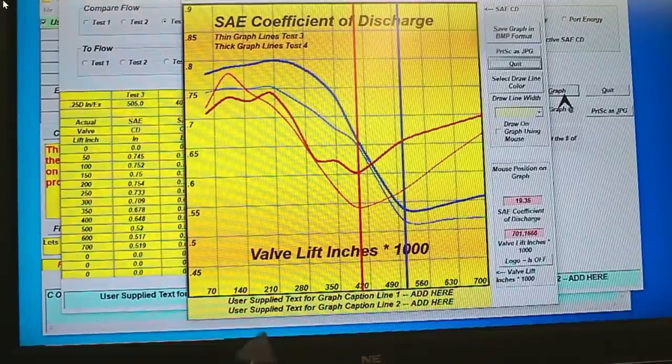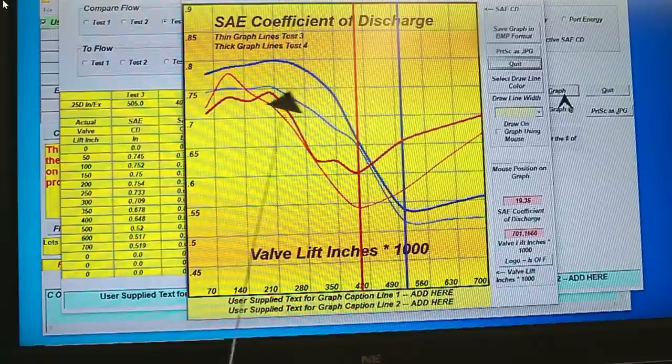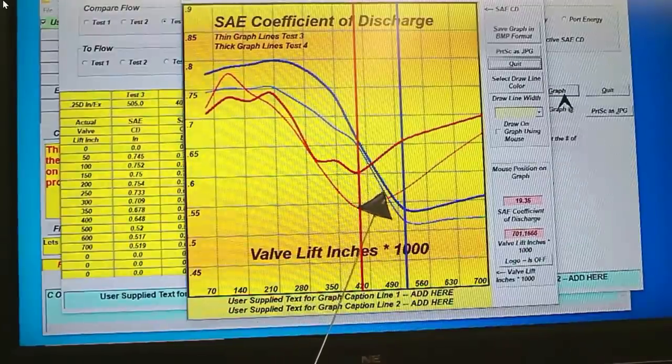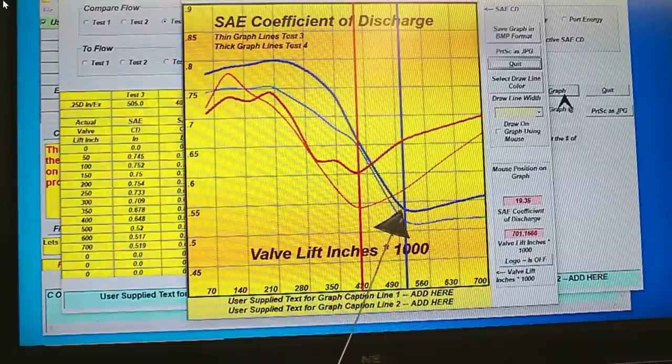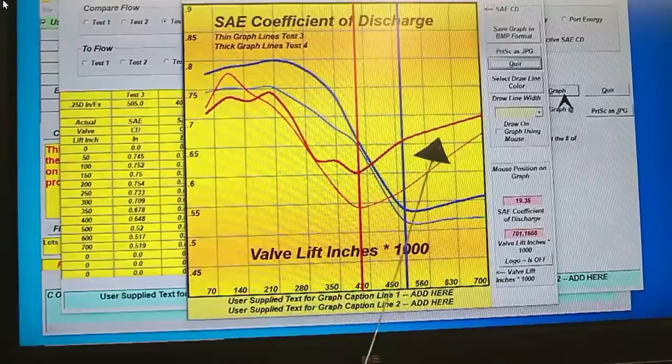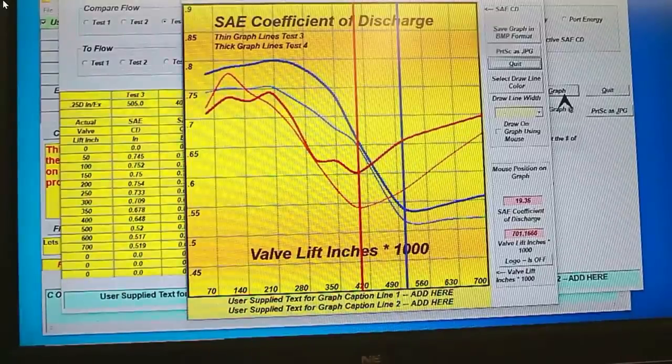Here's our discharge coefficient. You can see we've made a huge gain in the efficiency at low lift. That's all seat work. But as the lift goes up, so the two lines get closer, so the efficiency isn't up very much. But now we're starting to get an upturn on this. We've got a great upturn on the exhaust, and so that's working out good.